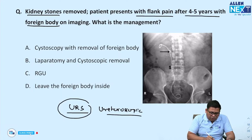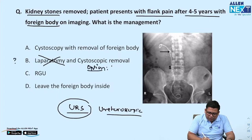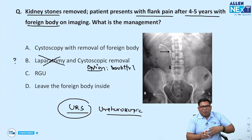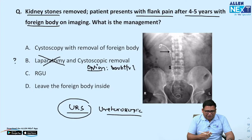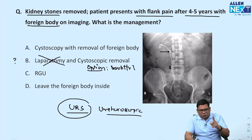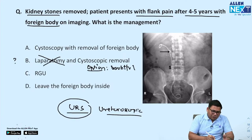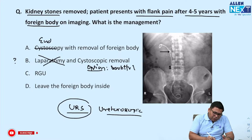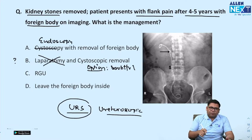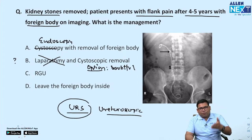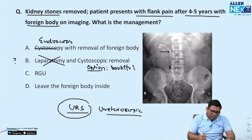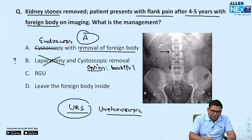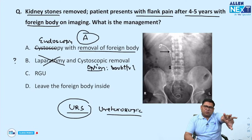Why will you go for laparotomy or cystoscopic retrieval? If the foreign body is at the level of PUJ or proximal one-third of the ureter, it should be endoscopic removal — ureteroscopic or renoscopic removal. Cystoscopy only goes to the bladder level; it cannot reach the ureteric level. The most probable answer is endoscopic removal of the foreign body. I have corrected this for you.